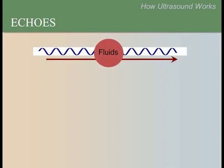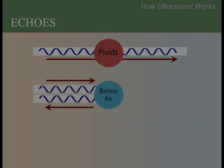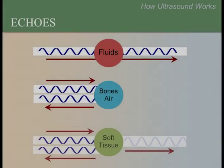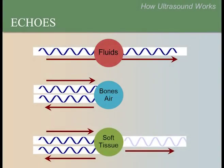Sound waves tend to pass through fluids without reflecting back to the transducer, meaning that fluid tends to produce no echoes. In contrast, sound waves cannot penetrate bone or air, so they are reflected back strongly and produce strong echoes. Soft tissues are somewhere in the middle — some sound waves pass through and some reflect back.